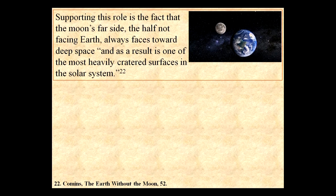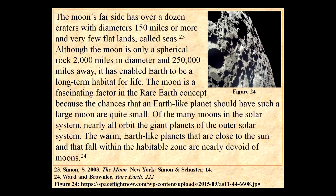So it's a shield. Supporting this role is the fact that the moon's far side — the half not facing Earth — always faces toward deep space, and as a result is one of the most heavily cratered surfaces in the entire solar system. The moon's far side has over a dozen craters with diameters of 150 miles or more — missed that one because the moon got it — and very few flat lands called seas or mares.